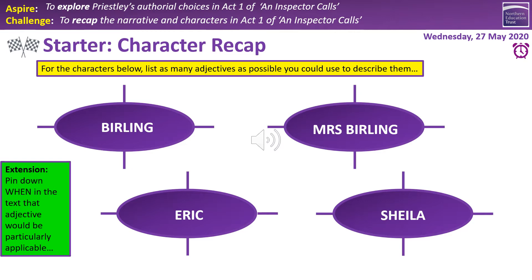For example, with Mr Burling, 'oblivious' is quite a nice word — he's oblivious to the realities of the world around him, to the truth about his family, to his own behaviour. If you want to push further into the green box extension, identify when in the text that adjective would be particularly applicable. With Burling, 'oblivious' is especially apt in Act 1, where we hear his big speech about the Titanic, war with Germany, or the situation in Russia — he is completely oblivious to the world around him. Aim for basic adjectives and, if you can, push beyond that into making specific references to moments in the text.